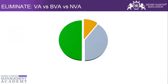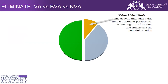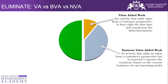Within process mapping, we talk about VA versus BVA versus NVA. Value Added (VA) is any activity that adds value from a customer perspective, is done right the first time, and transforms data or information. Business Value Added (BVA) is any activity that adds no value from a customer perspective but is required to operate the business — for example, refresher training, workshops, motivational sessions, leadership forums, and reviews. These are not value-added for the customer.